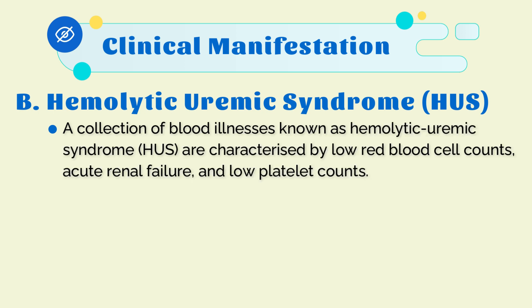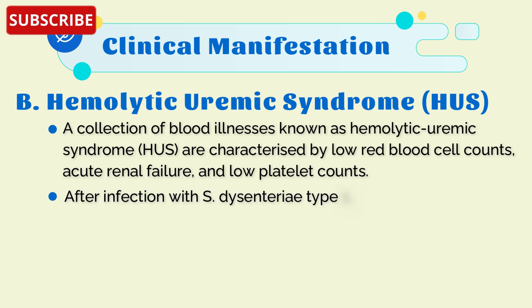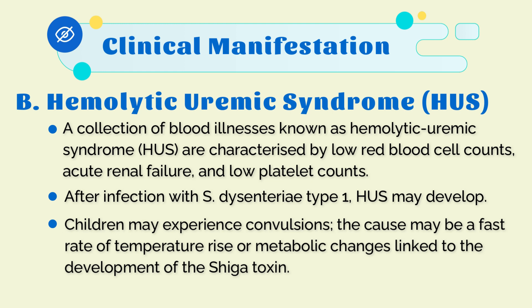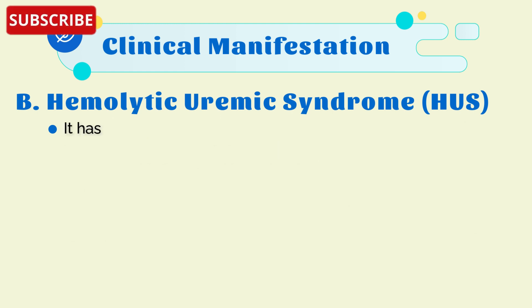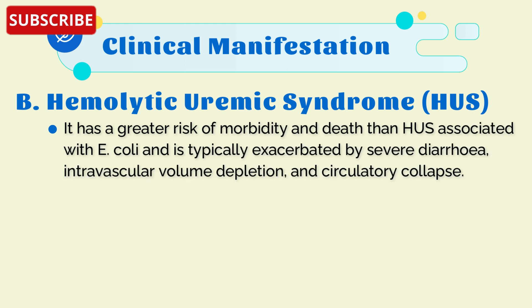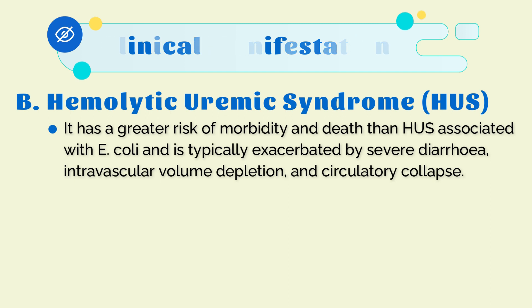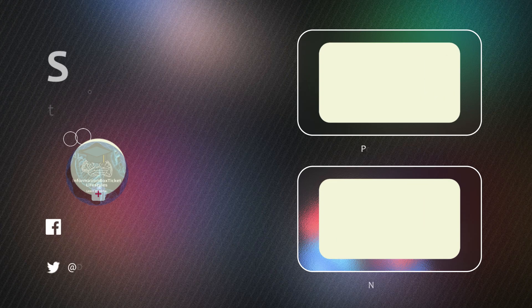The last topic is hemolytic uremic syndrome (HUS). This collection of blood illnesses is characterized by low red blood cell counts, acute renal failure, and low platelet counts. After infection with Shigella dysenteriae type 1, hemolytic uremic syndrome may develop. Children may experience convulsions; the main cause may be a rapid rate of temperature rise or metabolic changes linked to Shiga toxin. It carries a greater risk of morbidity and mortality than HUS associated with E. coli, and is typically exacerbated by severe diarrhea, intravascular volume depletion, and circulatory collapse.